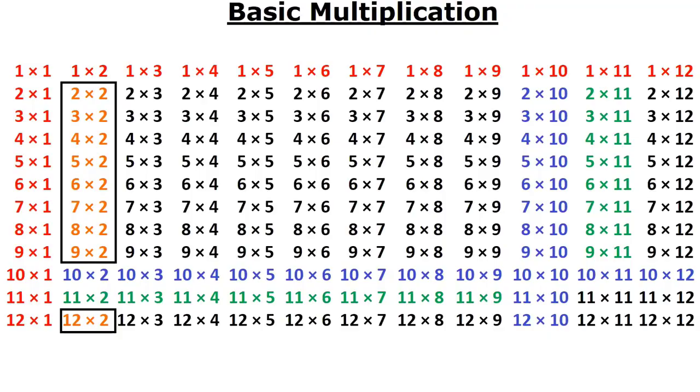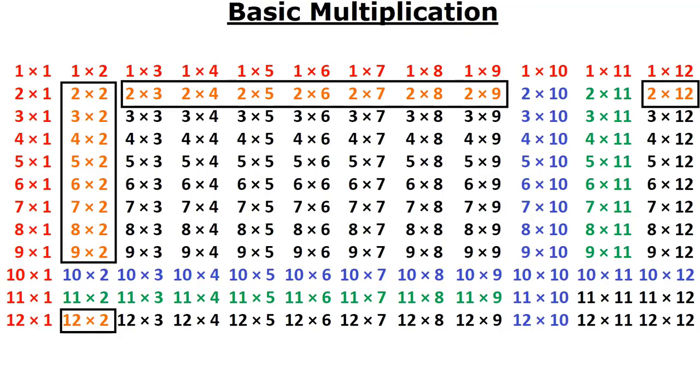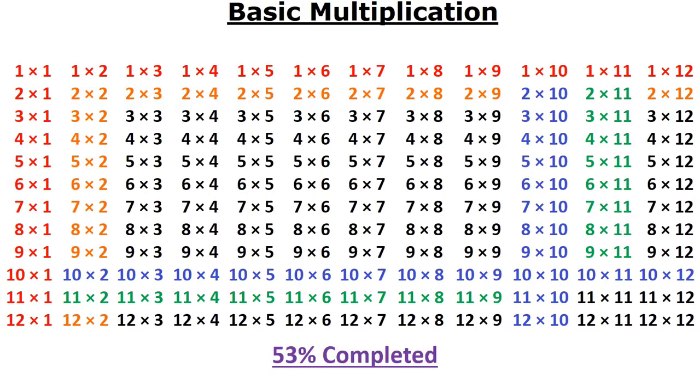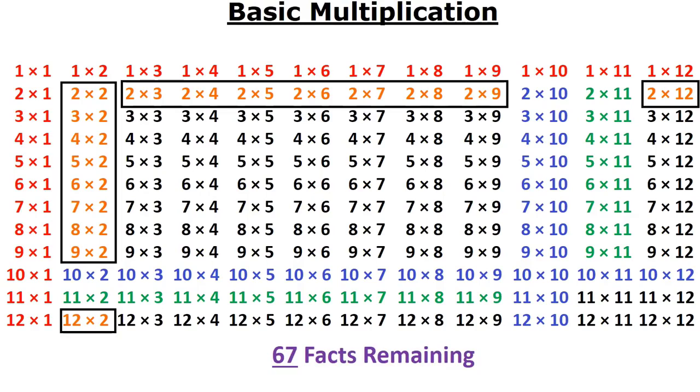Remaining. Well guess what? From those 4 rules, just 4 rules, you now know 77 math facts and you only have 67 remaining. It gets better.